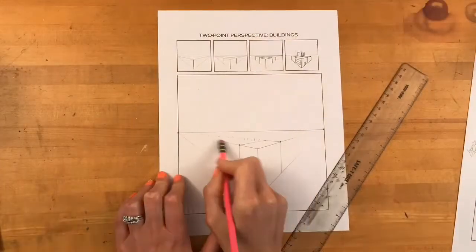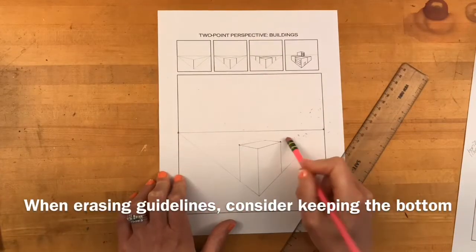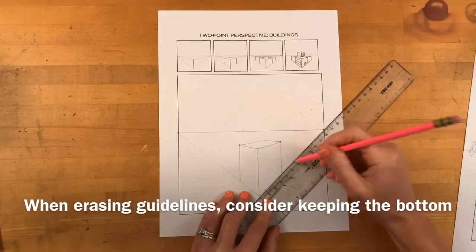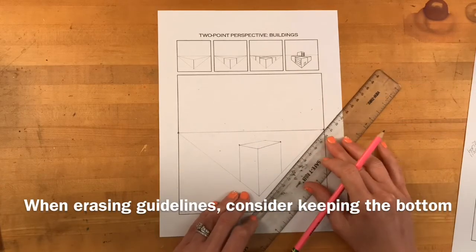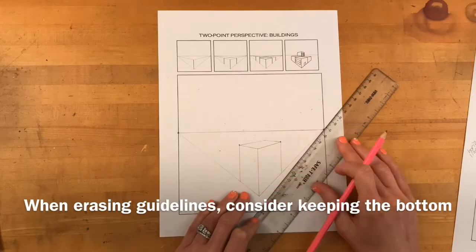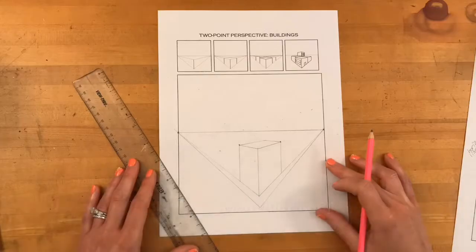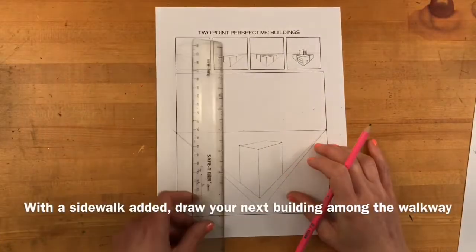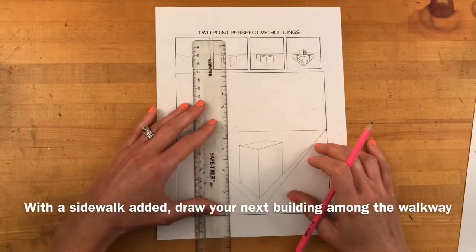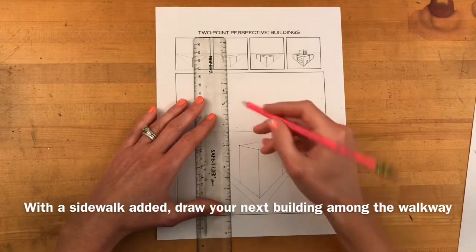Now you can erase your guidelines but when erasing the guidelines consider keeping the bottom. These lines could become a sidewalk or a road. So basically what you want to start envisioning is that this first building that you created is the building on the corner of a street.